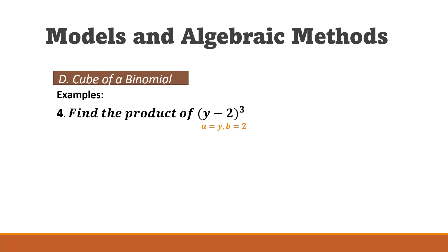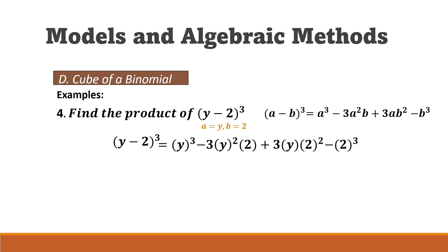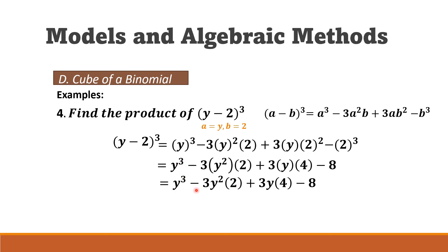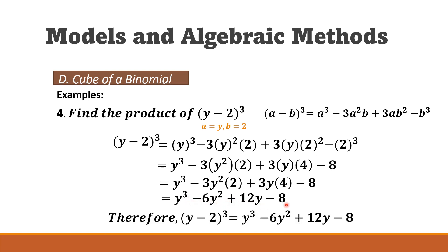For the last example, we find the product of (y − 2)³. The first term is y and the second term is 2. Following the same procedure: y³ − 3y²(2) + 3y(4) − 8, which simplifies to y³ − 6y² + 12y − 8.